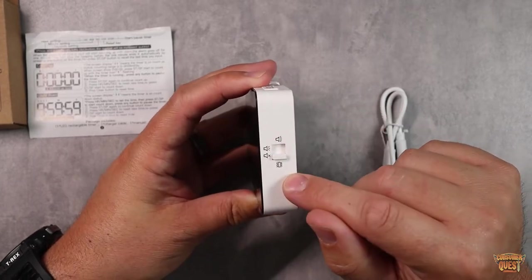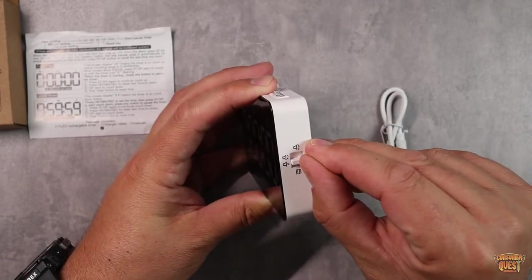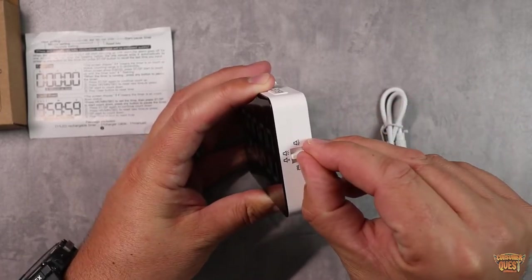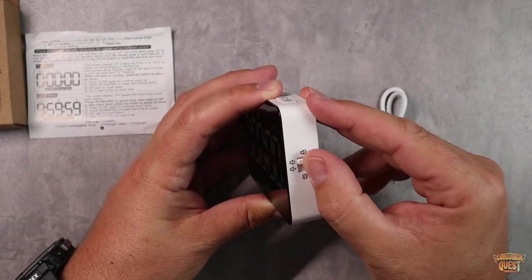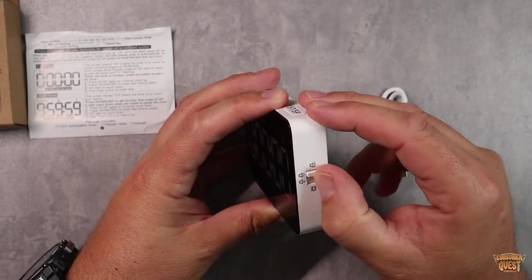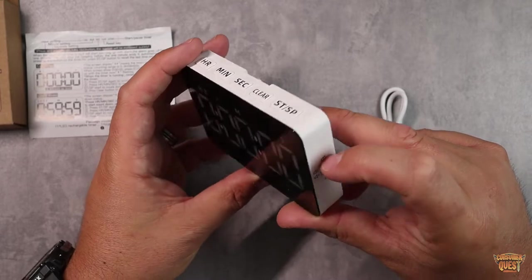Over on the side you have your different settings. All the way at the bottom is vibrate. Go up one and it's silent. Go up again, you've got volume level one. And then go up again, you got volume level two. That's the loudest possible option.